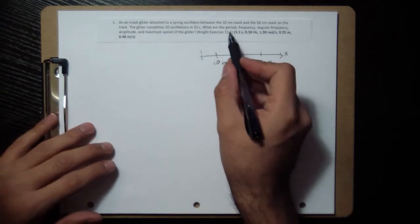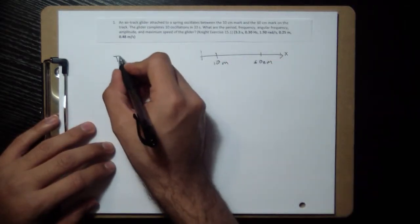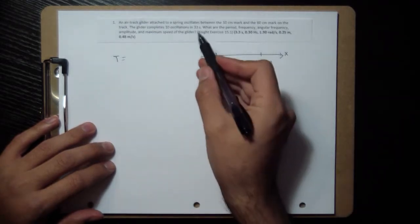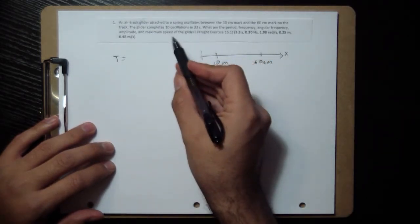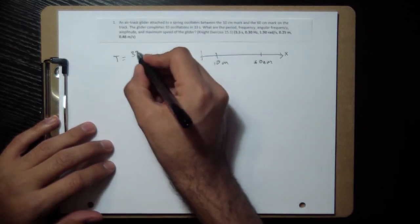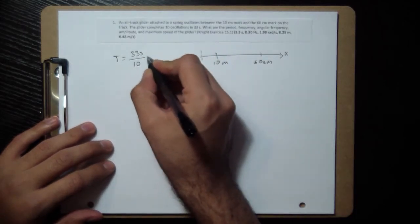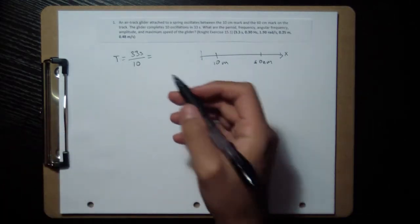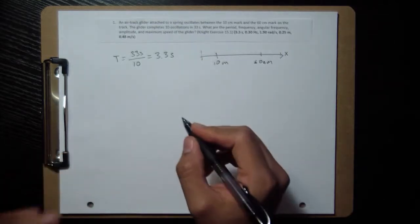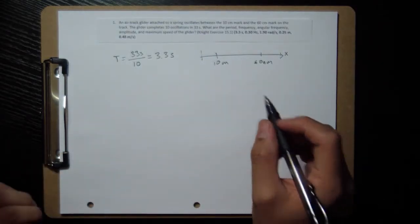The first one is we want to find out what the period is. So the period is how long it takes for it to complete one oscillation. So if it's 33 seconds for 10 oscillations, then it's going to be one-tenth of the 33 seconds. And divide that, 3.3 seconds is going to be our period.